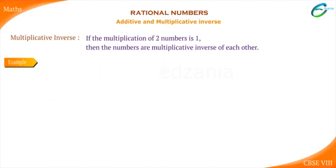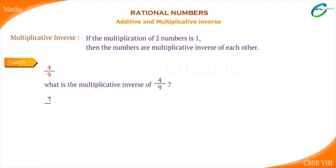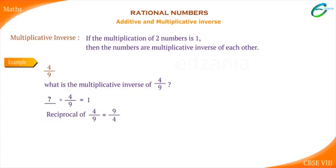Let us consider a rational number 4 upon 9. What is the multiplicative inverse of 4 upon 9? Which fraction must be multiplied by 4 upon 9 to get 1? We just have to take the reciprocal of 4 upon 9, that is 9 upon 4. So, 4 upon 9 multiplied by 9 upon 4 is equal to 1.